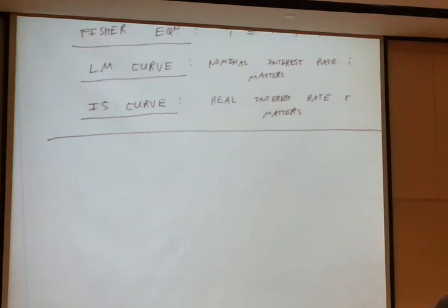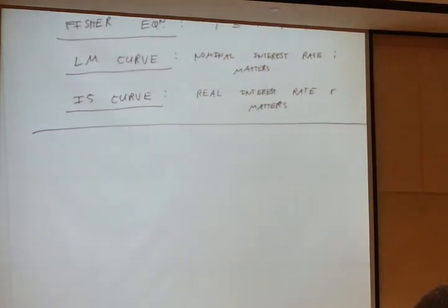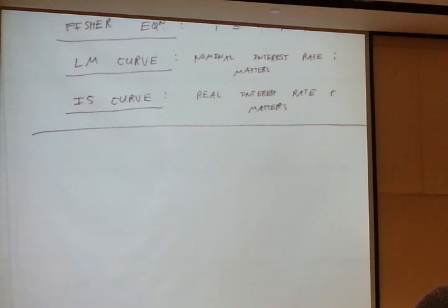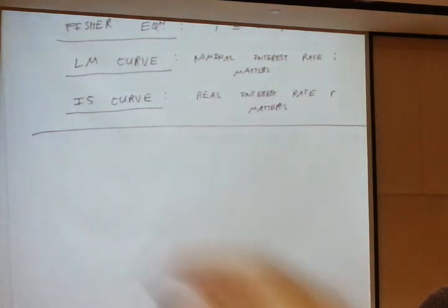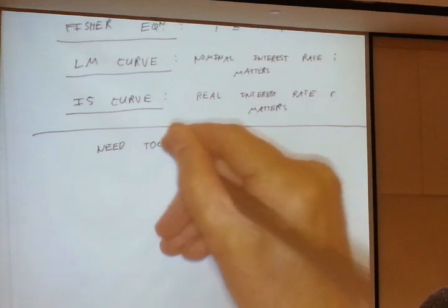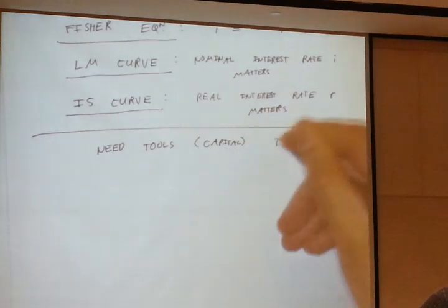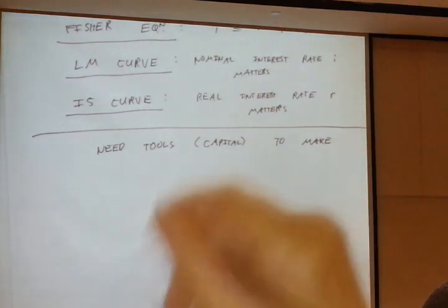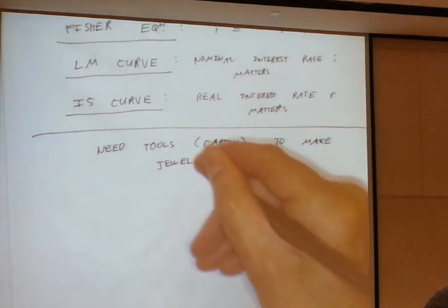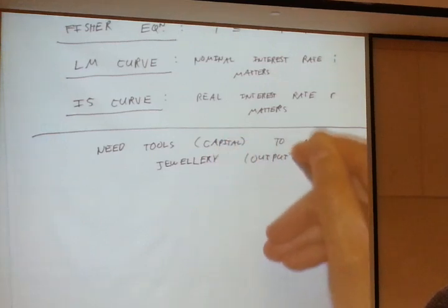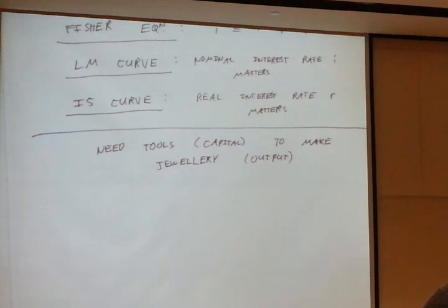So let's think about an example. Suppose the business in question is a craftsman who's going to make jewelry. So you need some capital. In the case of the craftsman, you need some tools to work with in order to make jewelry, which you'll then sell in the future. So the example would be that you need tools, this is going to be the capital that you invest in, to make jewelry.